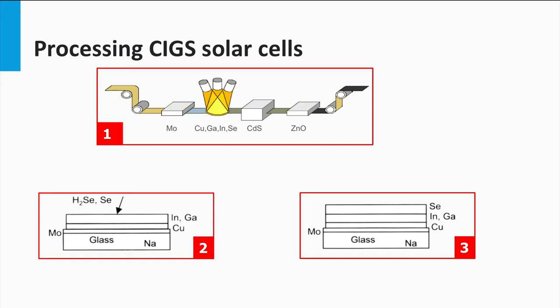Companies that use or have used the co-evaporation process are Würth Solar, Global Solar and Ascent Solar. Among CIGS companies using sputter approaches are Showa Shell, Solar Frontier, Avancis, MiaSolé, and Honda Soltec.